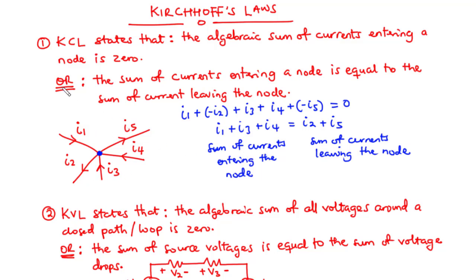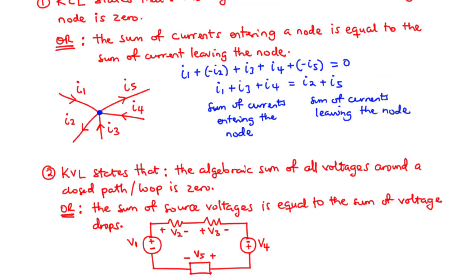Now let's move on to KVL — Kirchhoff's Voltage Law. Kirchhoff's Voltage Law states that the algebraic sum of all voltages around a closed path or a loop is zero. To demonstrate this, we are going to consider this circuit.